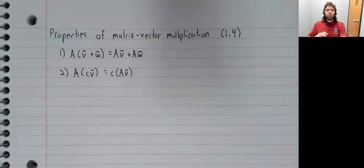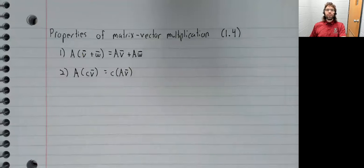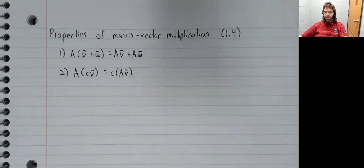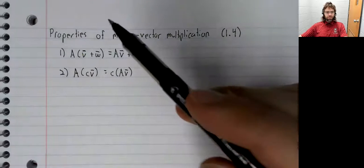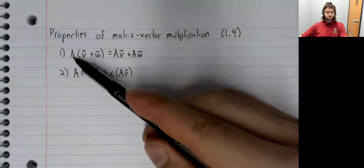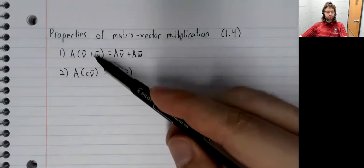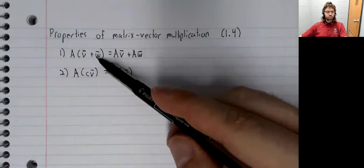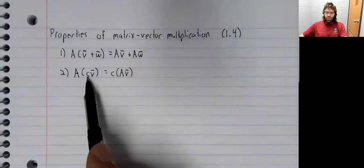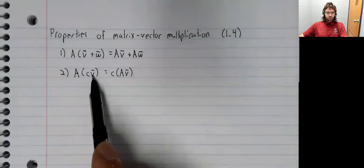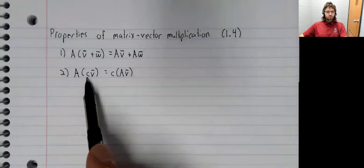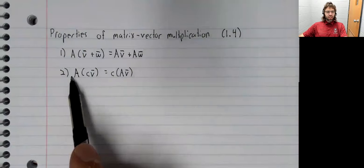In section 1.4, we made the observation that matrix vector multiplication has some nice properties. We observed that first, matrix multiplication distributes over vector addition. And second, that if you have a scalar attached to your vector, you can pull that scalar in front of the matrix.